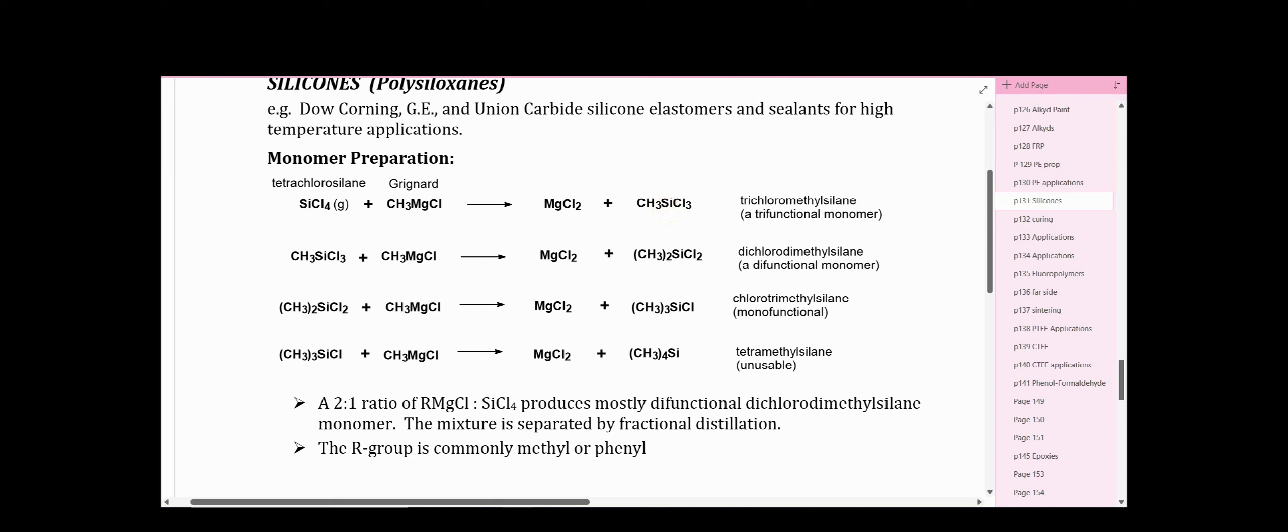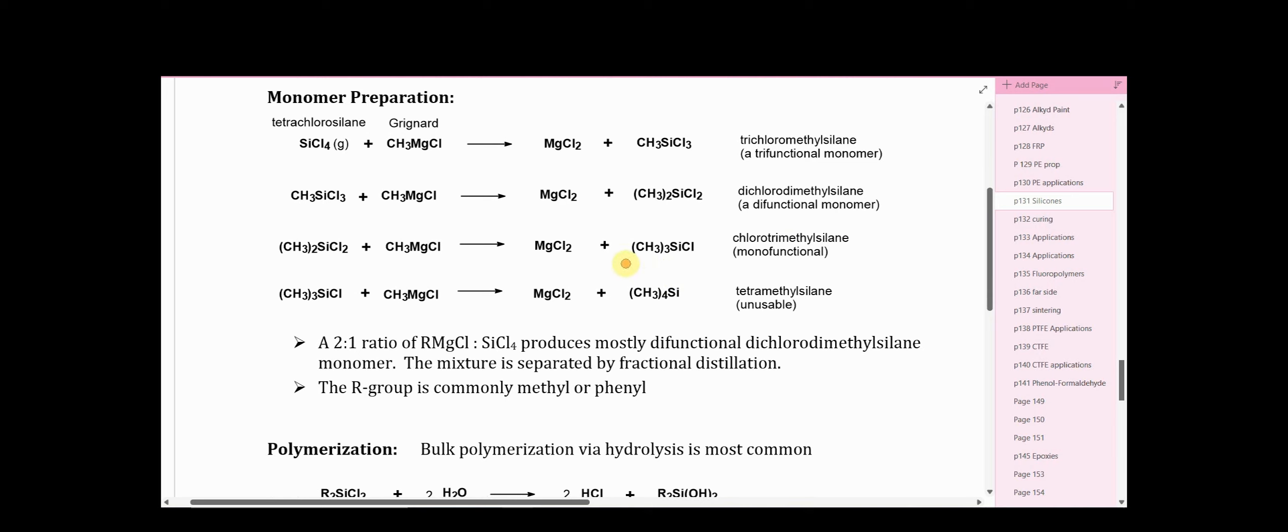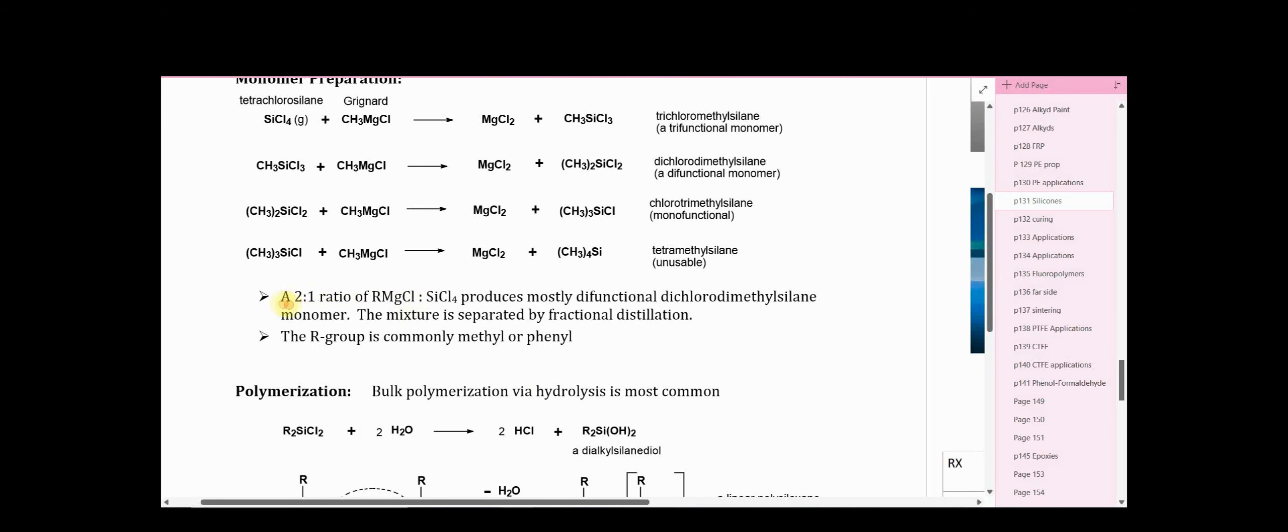This produces trichloromethylsilane, a trifunctional monomer, which reacts further. Another molecule of Grignard again displaces the chloride, giving us dichlorodimethylsilane - this should be a difunctional monomer. After a third addition of Grignard we'll get chlorotrimethylsilane, and after a fourth addition, not necessarily desired here, we wind up with tetramethylsilane, which isn't really usable as a monomer to produce polymer.